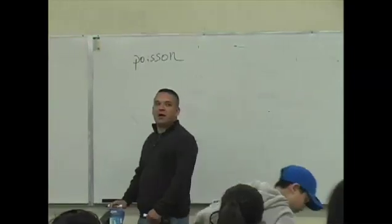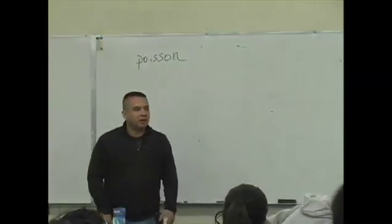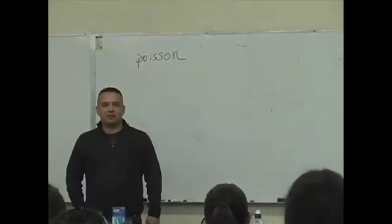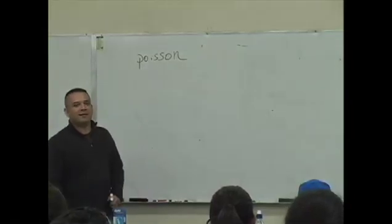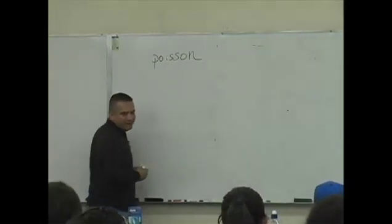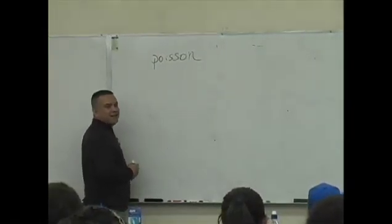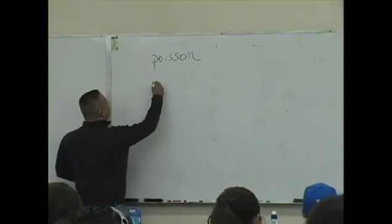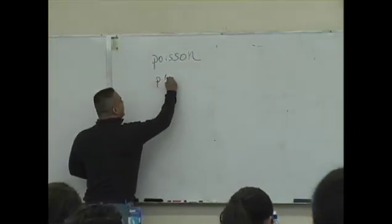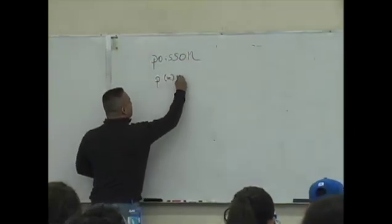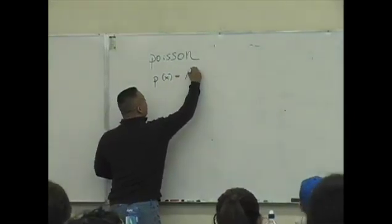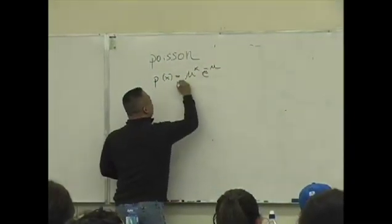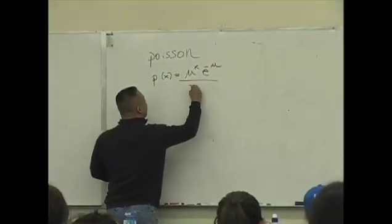The Poisson probability distribution — when students read it, they think it's poison. It's not poison. It's actually French for, you know, okay. P of x equals mu to the x, e to the minus mu, over x factorial.